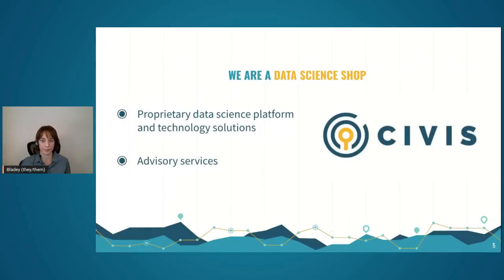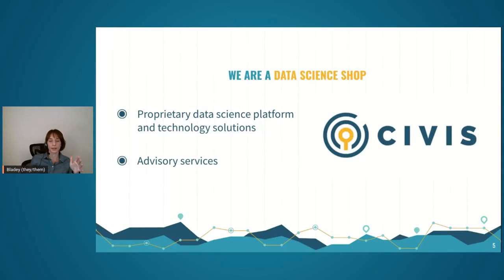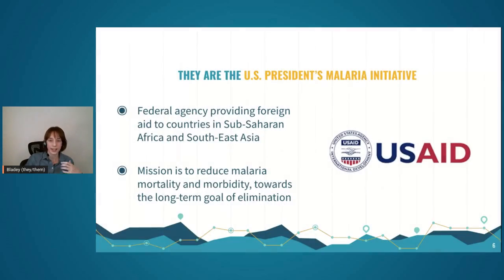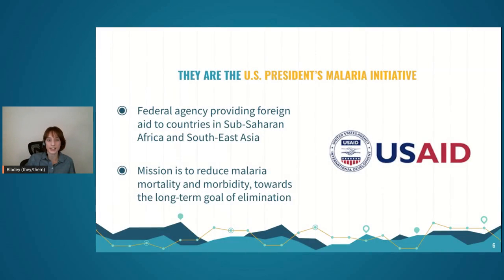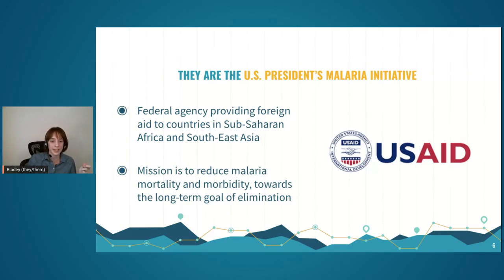Starting with the case study. Civis is a data science shop. We build a proprietary data science platform, and we have an advisory wing that does high-touch implementation and consultancy work. Our partner in this case is the U.S. President's Malaria Initiative, or PMI — an initiative of the U.S. foreign aid agency USAID. Their mission is to reduce malaria in parts of sub-Saharan Africa and Southeast Asia.